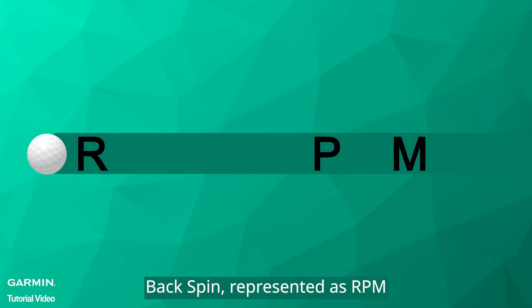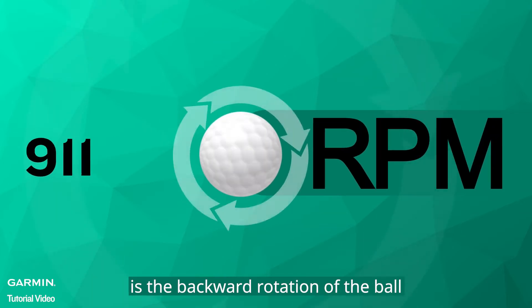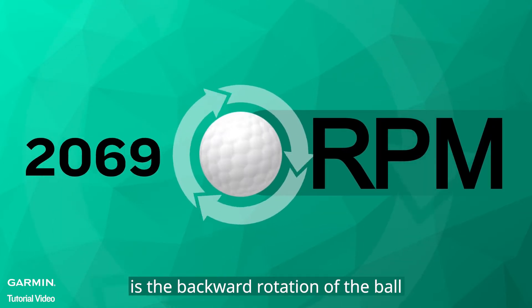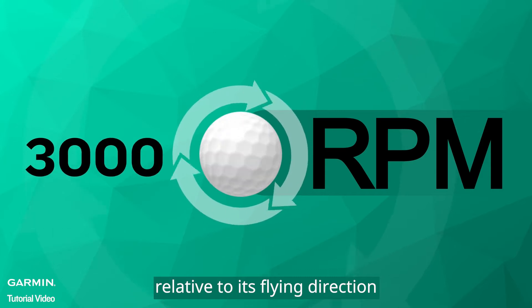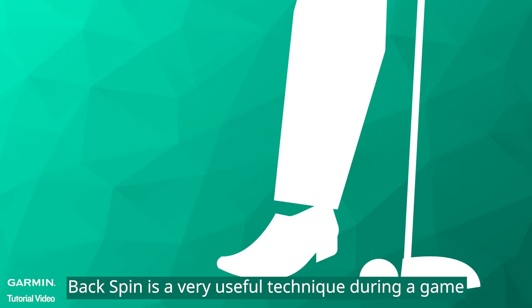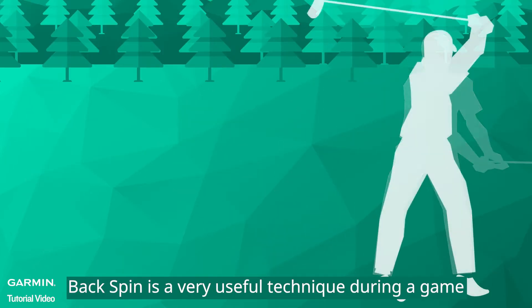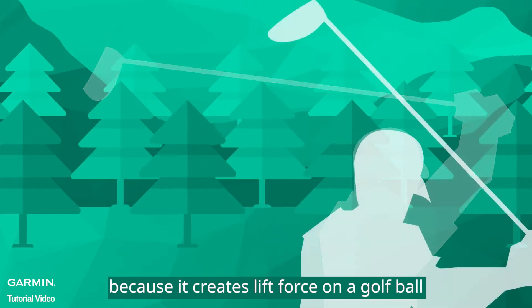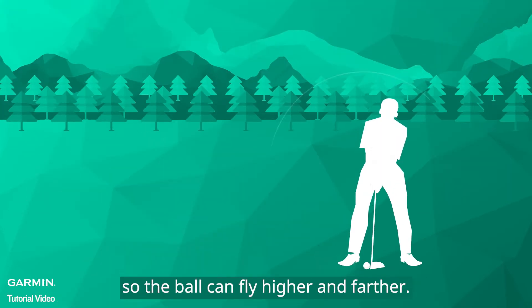Backspin, represented as RPM, is the backward rotation of the ball relative to its flight direction. Backspin is a very useful technique during the game because it creates lift force on the golf ball so the ball can fly higher and farther.